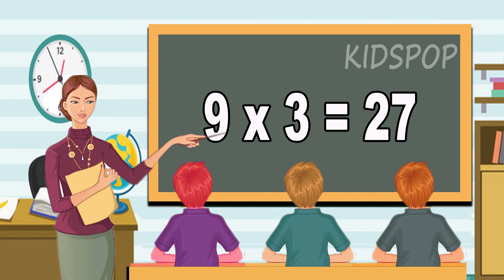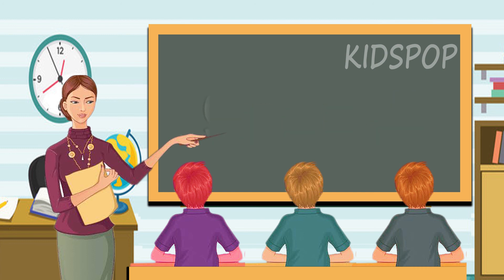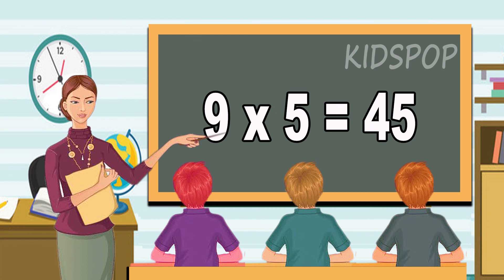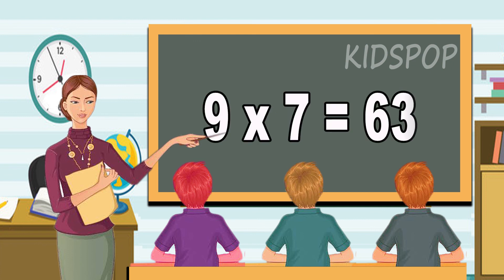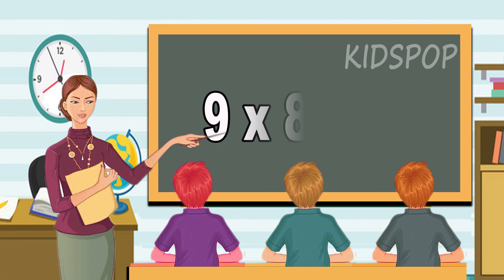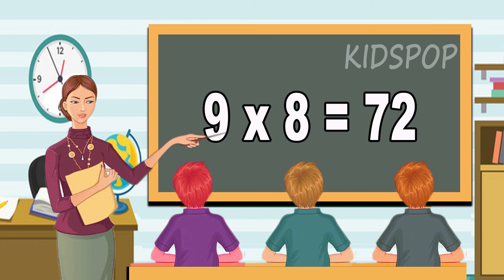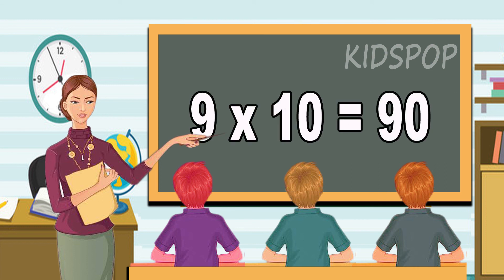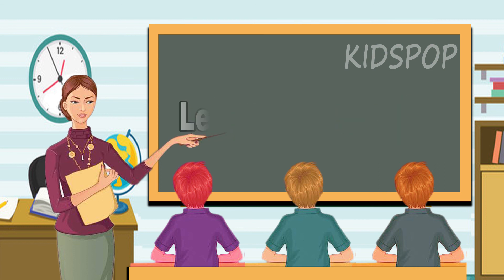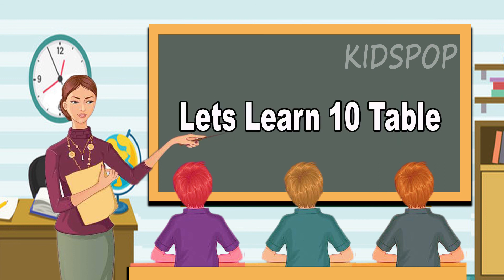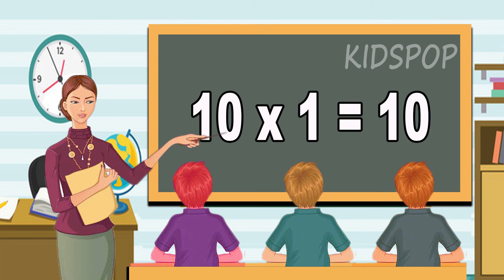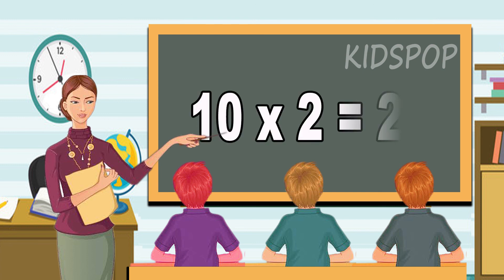Let's learn nine table. Nine ones are nine. Nine twos are eighteen. Nine threes are twenty-seven. Nine fours are thirty-six. Nine fives are forty-five. Nine sixes are fifty-four. Nine sevens are sixty-three. Nine eights are seventy-two.